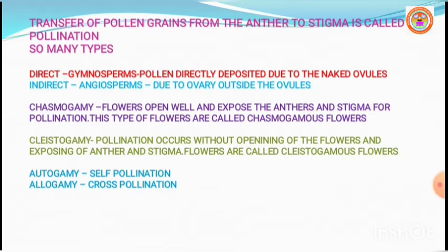In the majority of angiosperms, flowers open and expose their mature anther and stigma for pollination. Such flowers are collectively called chasmogamous flowers. Whereas in cleistogamous flowers, pollination occurs without the flower opening or exposing the sex organs. The phenomena of pollination which takes place in closed flowers are called cleistogamy.